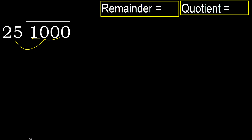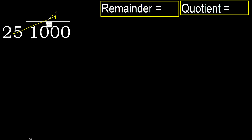100 is not less, therefore with 100. 25 multiplied by which number is nearest to 100 but not greater? 25 multiplied by 5 is 100 — 25 is greater, so multiply by 4. 100 is not greater.